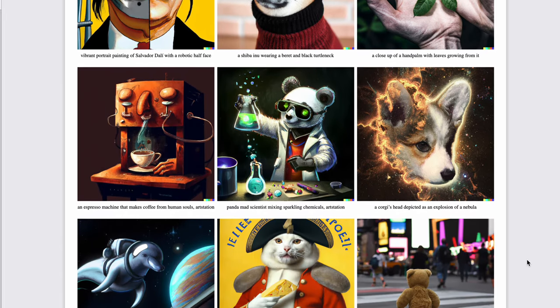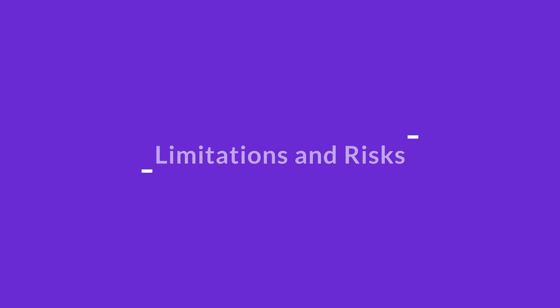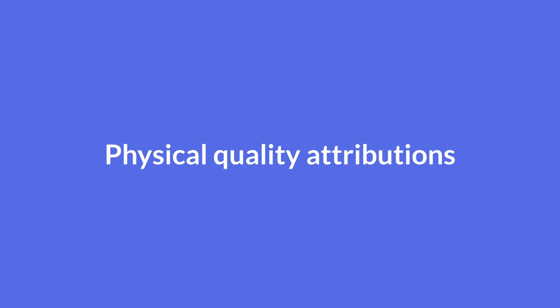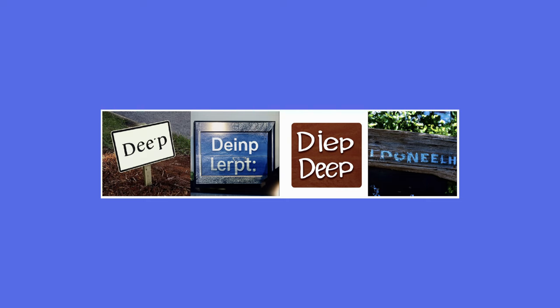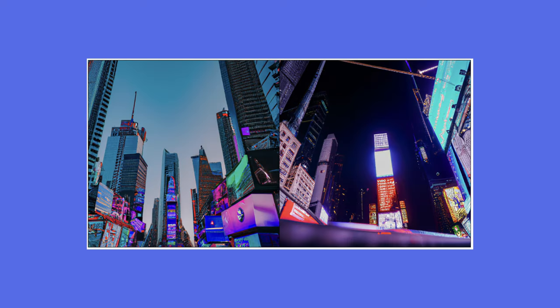Looking at the examples created, it is not hard to be convinced this is a groundbreaking model. But there are still some shortcomings. First, DALL-E 2 is worse at binding attributes to objects than models like Glide — for example, when asked to depict a red cube on top of a blue cube, it tends to confuse which cube is which color. It is also not yet good at creating coherent text in images, and the model has a hard time producing details in complex scenes — for example, when generating Times Square, the screens lack readable detail.